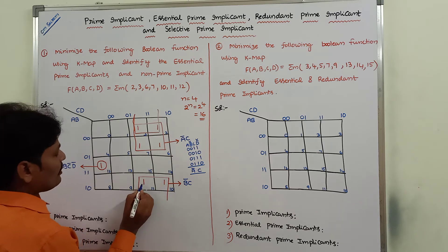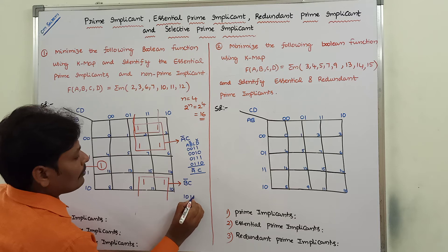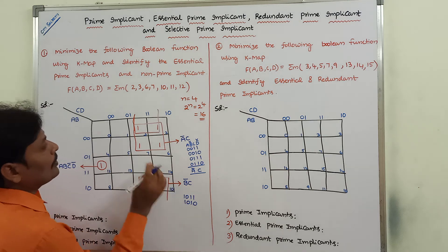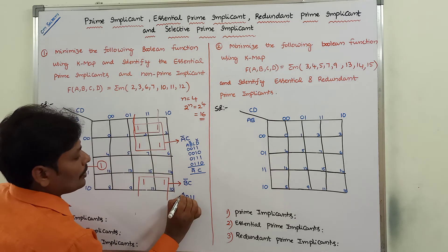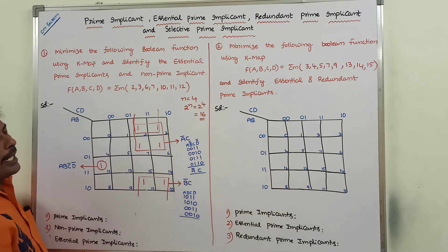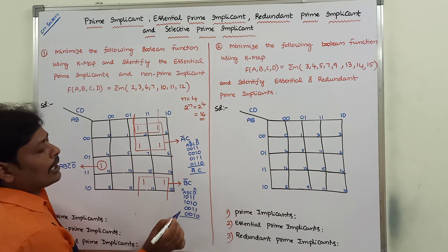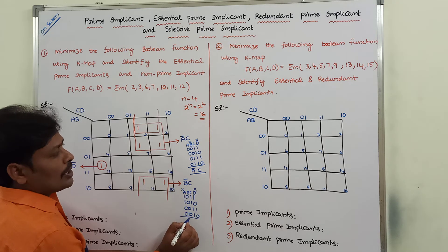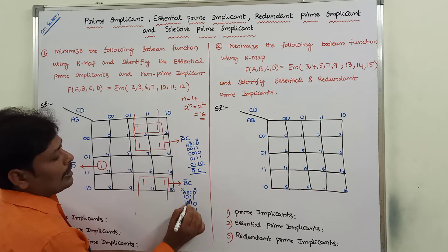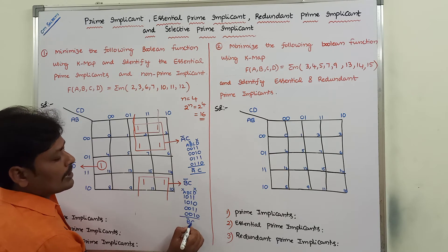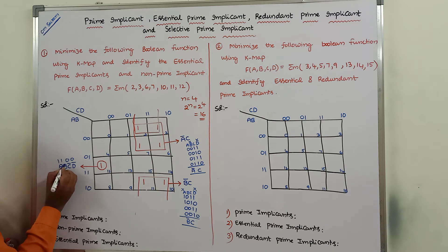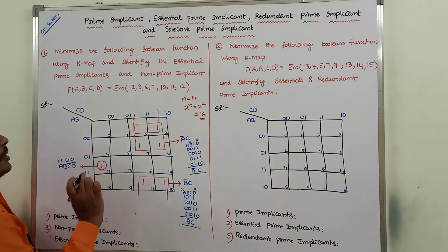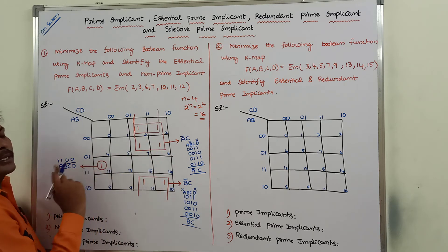For the second quad, listing A, B, C, D values: the A column is ignored as it contains mixed values. The B column contains only zeros — B value 0 means B-bar. The C column contains only ones — C value 1 means C. The expression is B-bar C. For the single one, the row is 1, 1 and column is 0, 0: A value 1 means A, B value 1 means B, C value 0 means C-bar, D value 0 means D-bar. So that expression is AB C-bar D-bar. We get three prime implicants from these groupings.